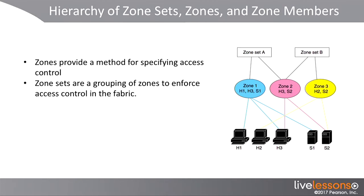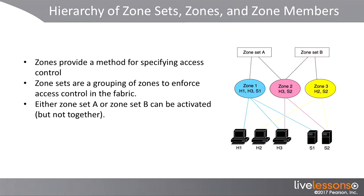We then take those zones and we can group them together in what we call a zone set, and then we can deploy that zone set across the fabric. Only one zone set can be active at the same time because they share a common zone. So you can either have zone A active or zone B active, but they can't be active at the same time.